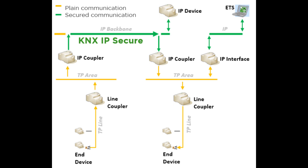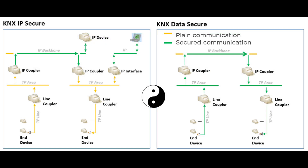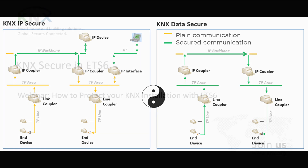KNX IP tunneling or routing messages cannot be recorded or manipulated on IP, and a security wrapper is added around the complete KNX Net/IP data traffic. The KNX Data Secure and KNX IP Secure mechanisms provide a secured communication channel, thereby ensuring data integrity, freshness, and confidentiality of the data.